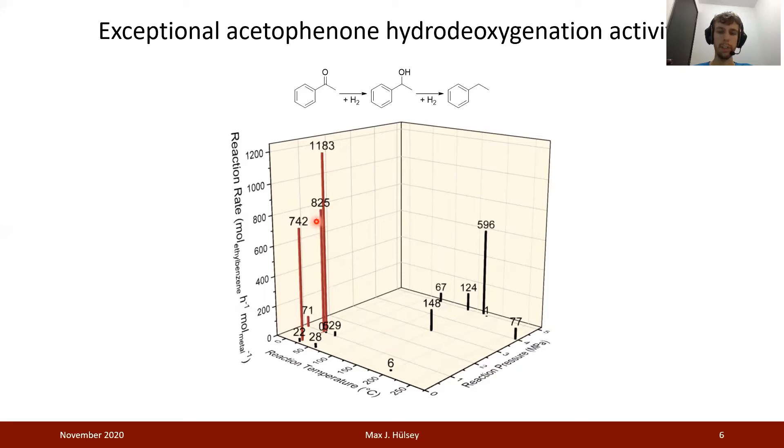The red bars indicate the data we got from our catalyst, while the black bars are either reference catalysts, mostly commercial catalysts, or previously reported data. We see that either the previously reported catalysts have very low rates under comparable reaction conditions to what we used, or in order to achieve comparable reaction rates, we need significantly higher reaction pressure and reaction temperature.